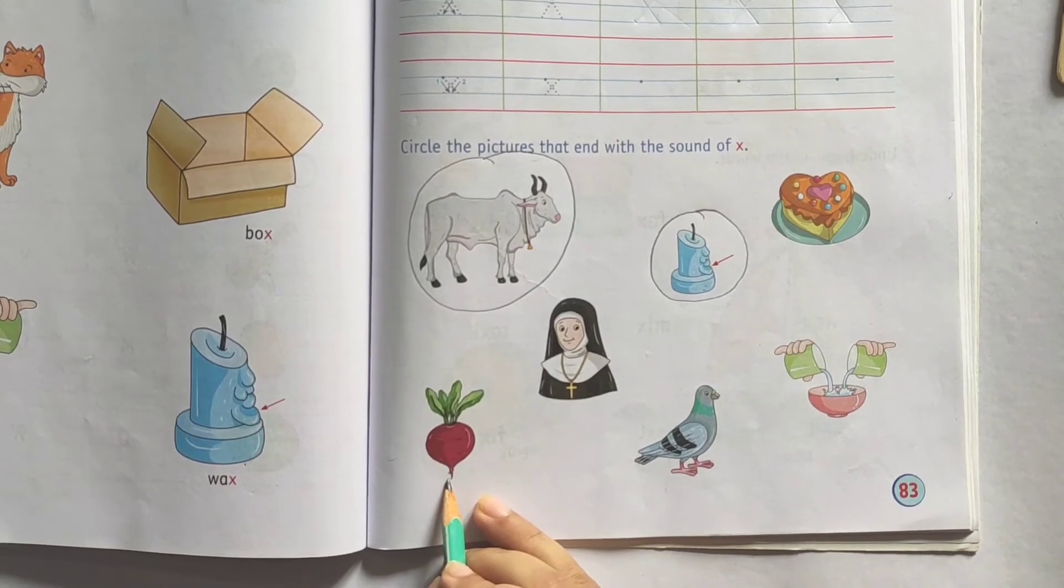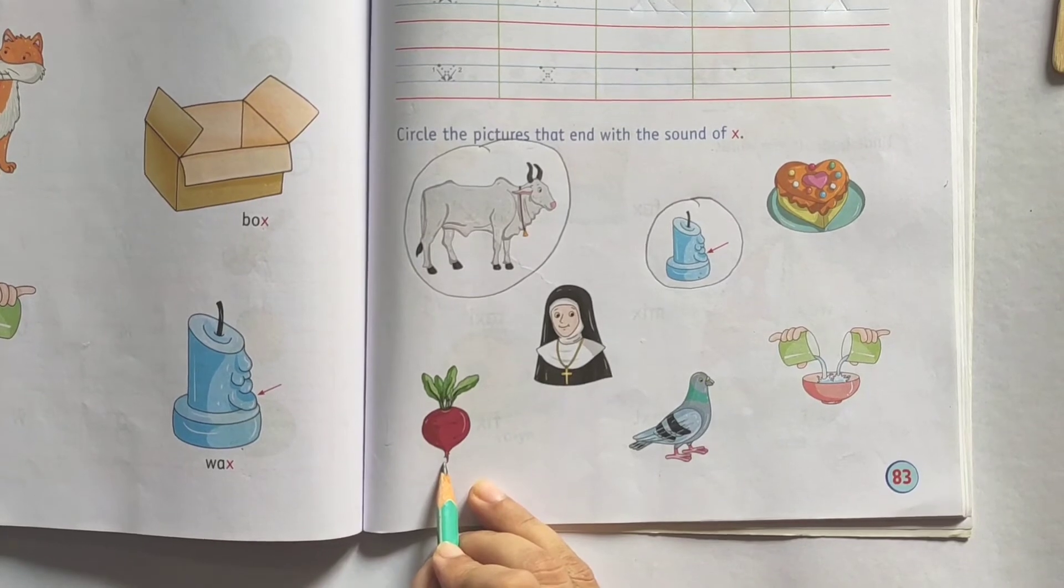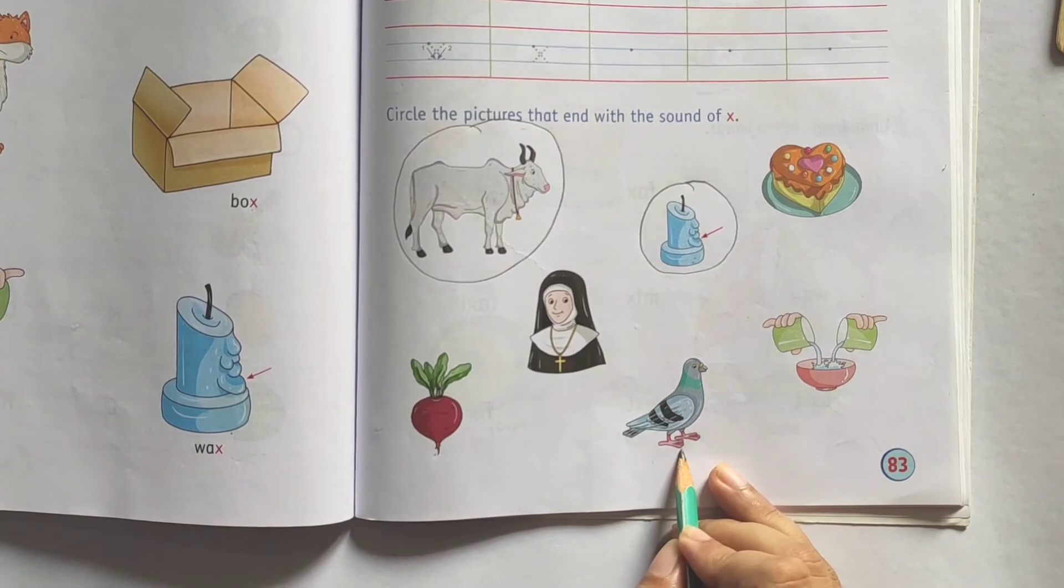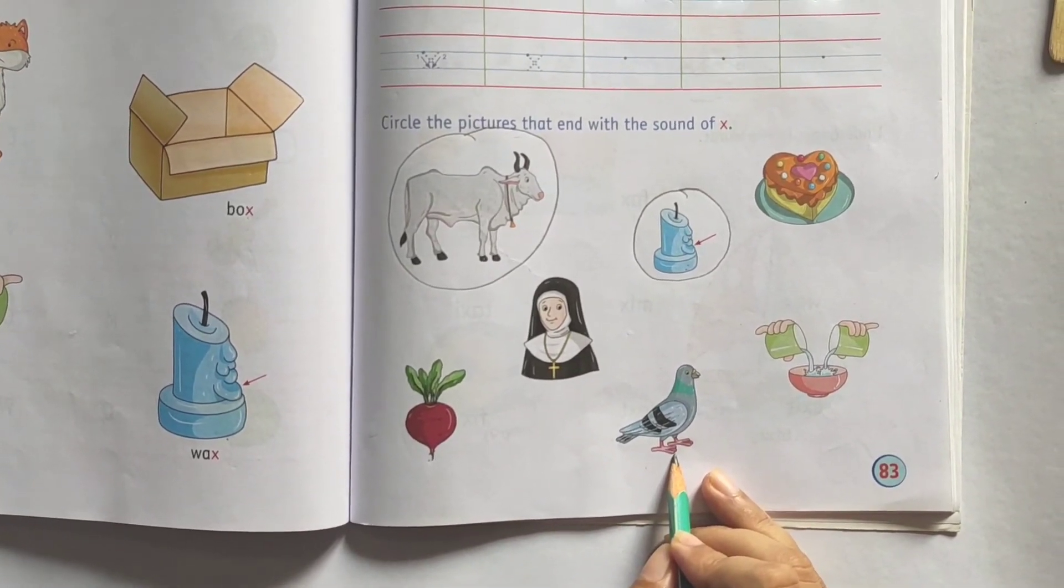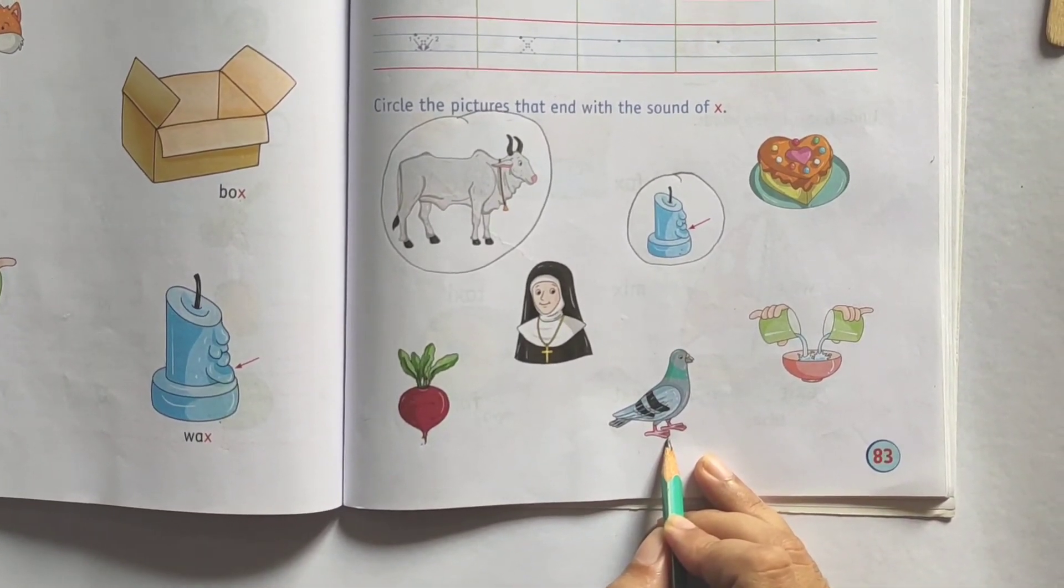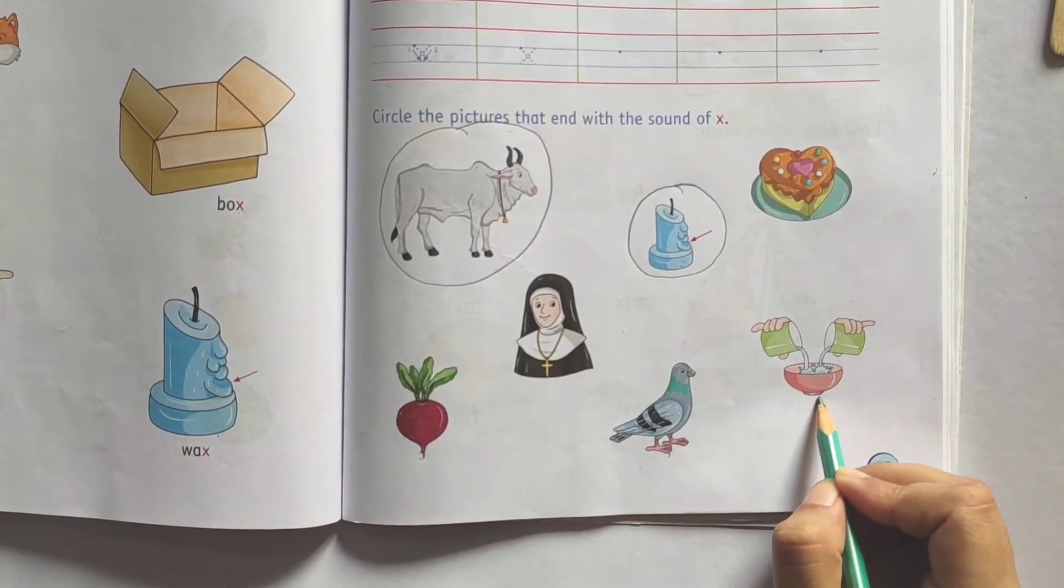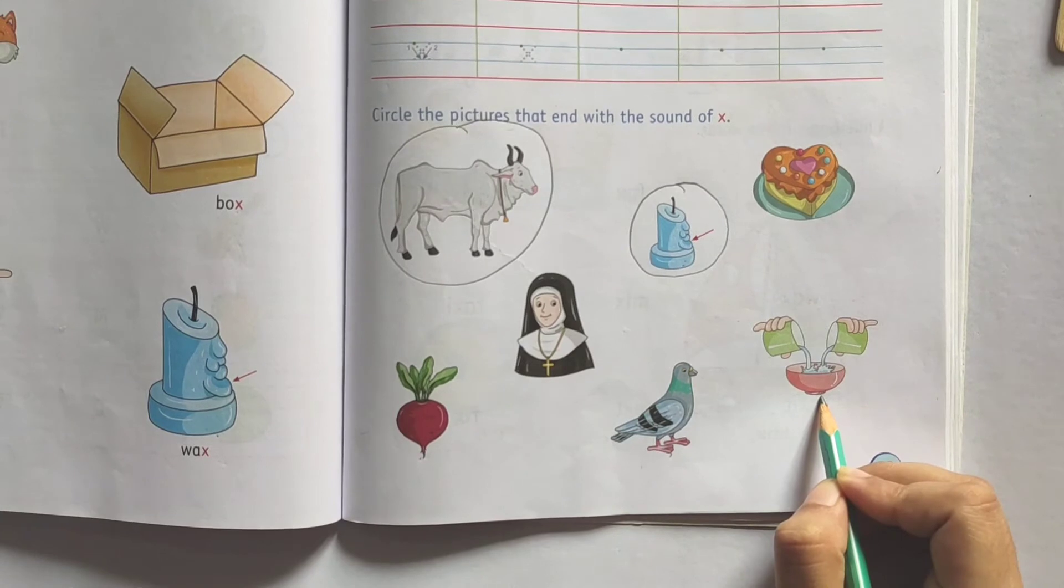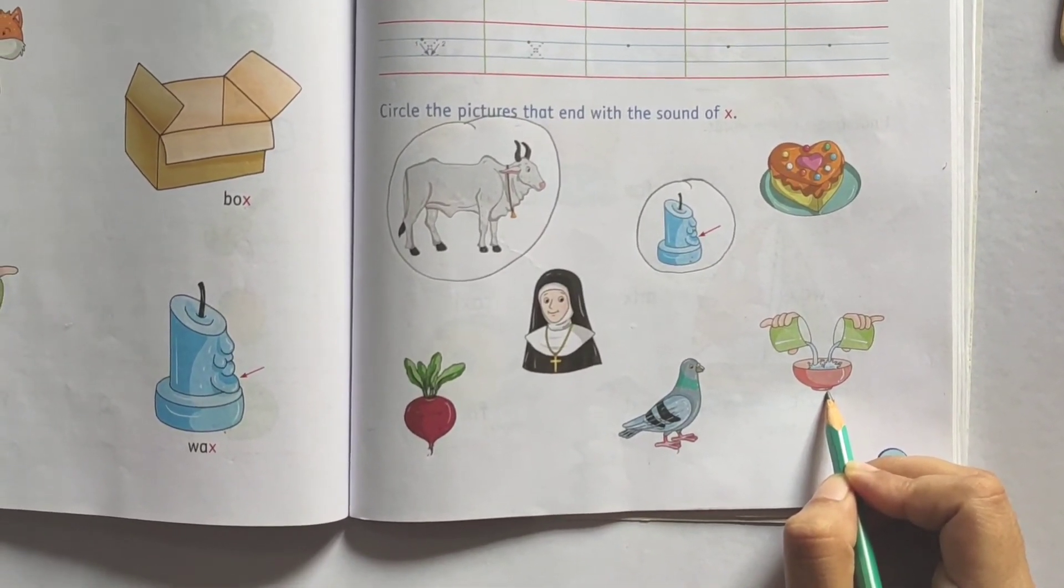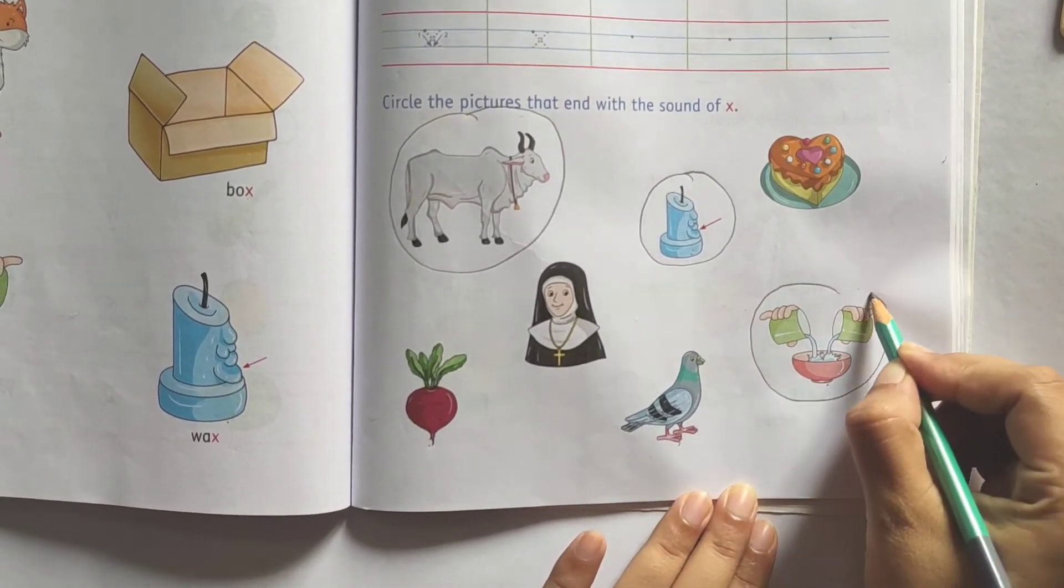Next picture is turnip. Turnip ke end me aapko kus sound aya. Nahi aya. So, we will not circle it. Next is pigeon. Pigeon ke end me kus sound aapko sunai deya. Nahi na. So, we will not circle it. Next picture is mix. Mix word ke end me aapko kus sound sunai deya na. So, we will circle the picture.